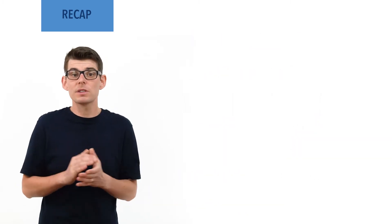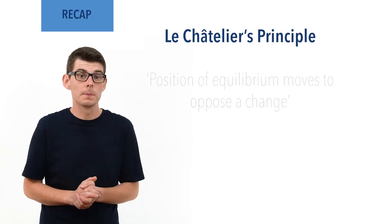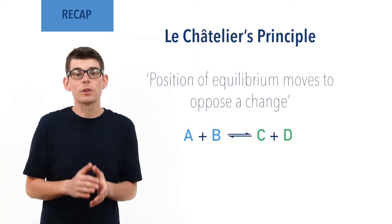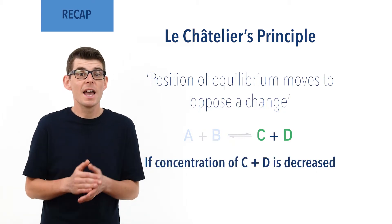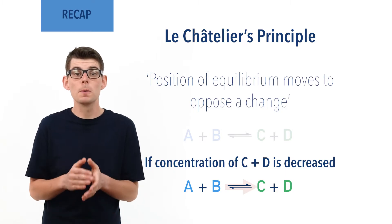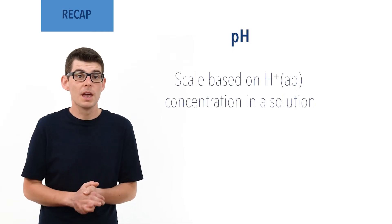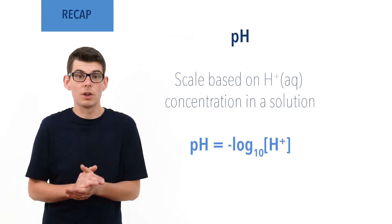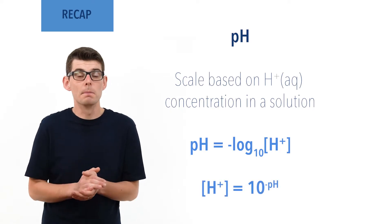Le Chatelier's principle tells us that a position of equilibrium will move to oppose the change made to the system. For example, for A and B in equilibrium with products C and D, if the concentration of C or D is decreased, the position of equilibrium will shift to the right and favour the forward reaction, producing more C and D. pH is a scale used to represent the concentration of H⁺ ions in solution: pH = −log₁₀[H⁺], and [H⁺] = 10^(−pH).